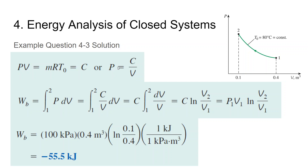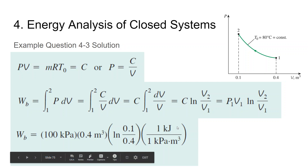We can rewrite the ideal gas relation as pV = mRT = C, or p = C/V. The boundary work is the integral of p dV, so substituting p = C/V and integrating gives: W = C · ln(V₂/V₁). Since C = p₁V₁ = p₂V₂, the work can also be written as W = p₁V₁ · ln(V₂/V₁). Substituting the values gives an answer of −55.5 kJ.